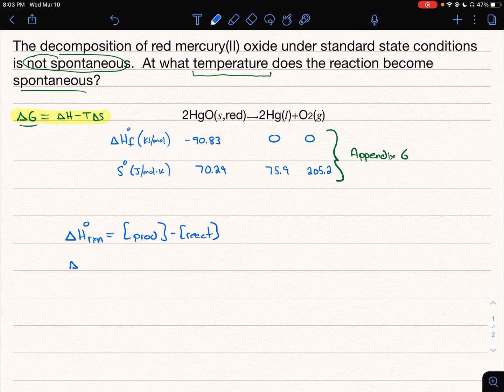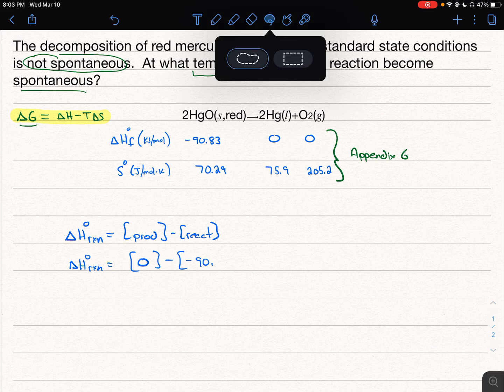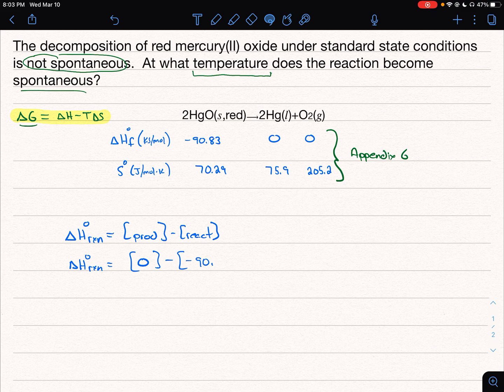And in this case, we have delta H of reaction is going to be equal to - and we can see our products in this case are actually both zero, because they're in their elemental state. And then we're going to subtract the negative 90.2. And watch out here, I went a little too fast myself. Watch out for your coefficients.